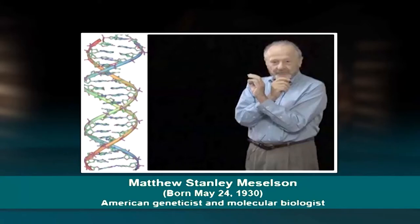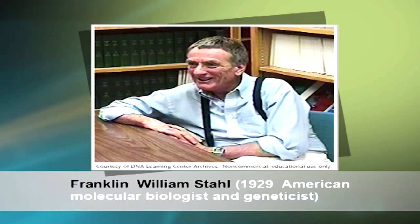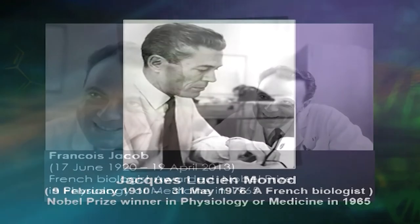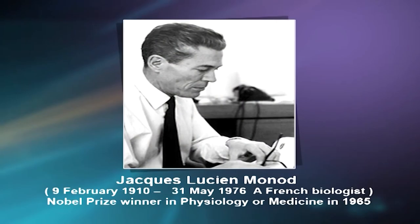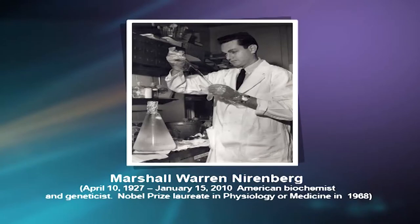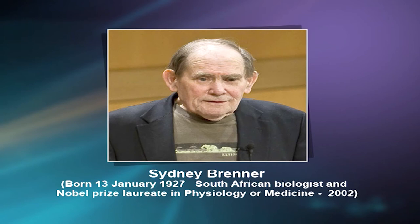In 1958, Matthew Meselson and F.W. Stahl proved the semi-conservative mode of DNA replication using the technique of density equilibrium centrifugation. F. Jacob and J. Monod in 1961 published genetic regulatory mechanisms in the synthesis of proteins, explaining the lac operon controlling network in E. coli. In the same year, Marshall Nirenberg proposed that each amino acid corresponds to a triplet code — the first identified amino acid being phenylalanine, coded by UUU. Sidney Brenner, François Jacob and Matthew Meselson described ribosomes as the site of protein synthesis and proved that mRNA exists and binds to the ribosome.